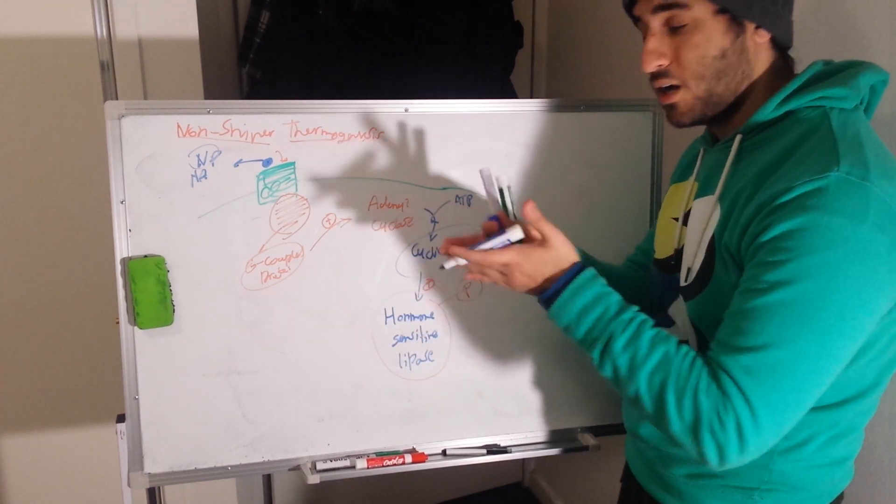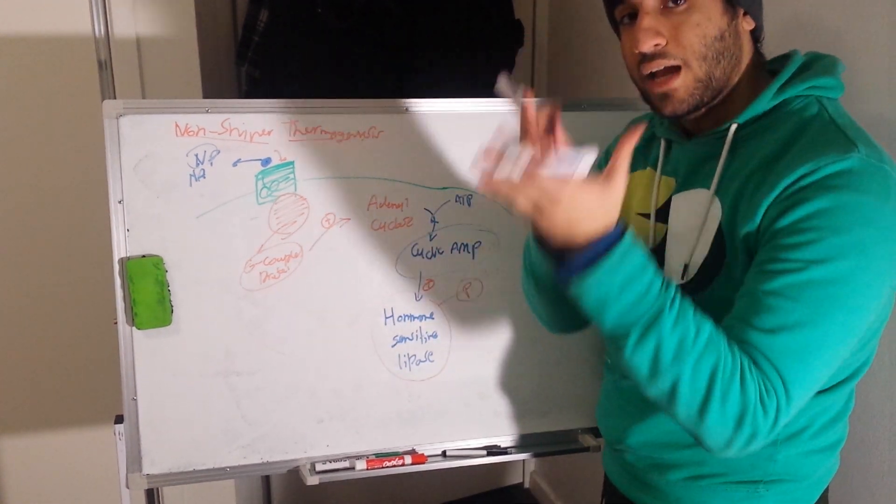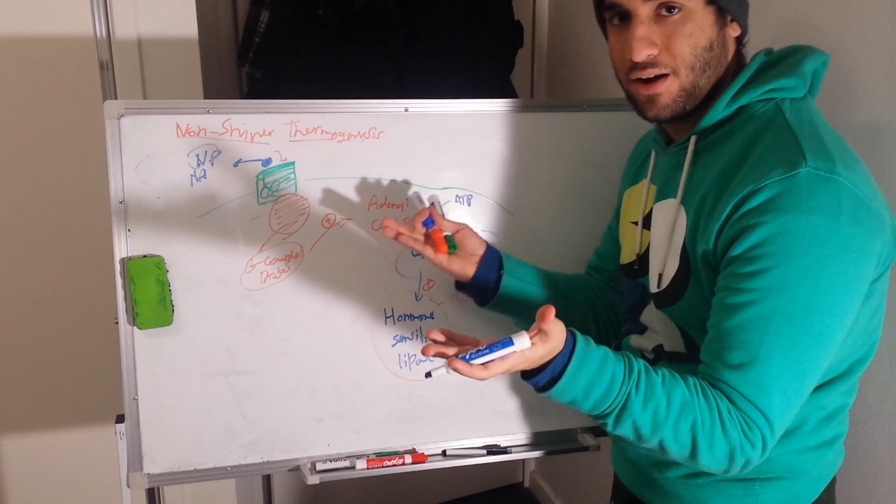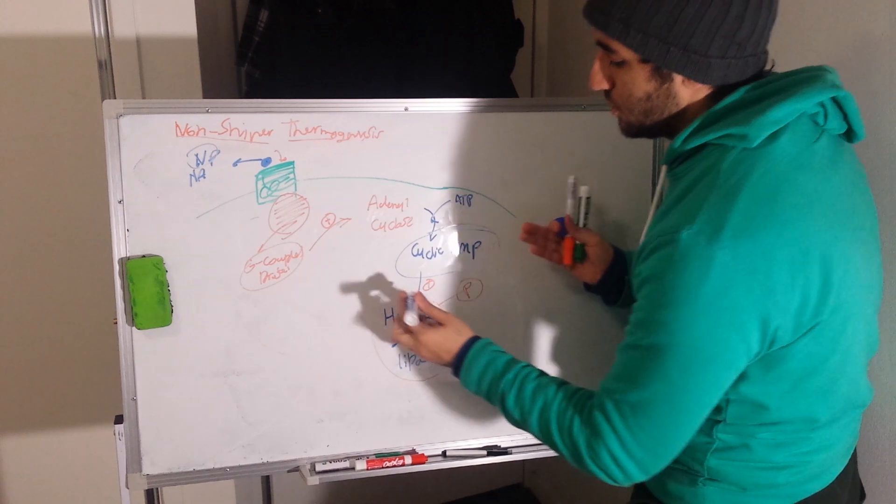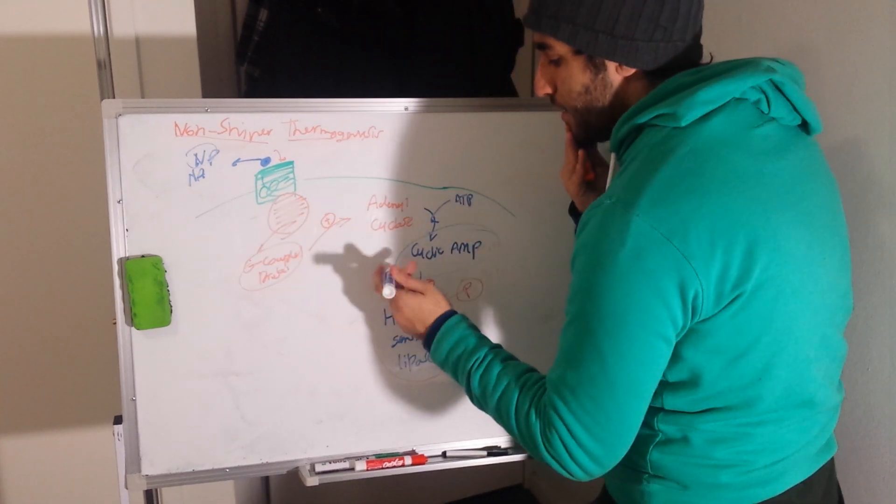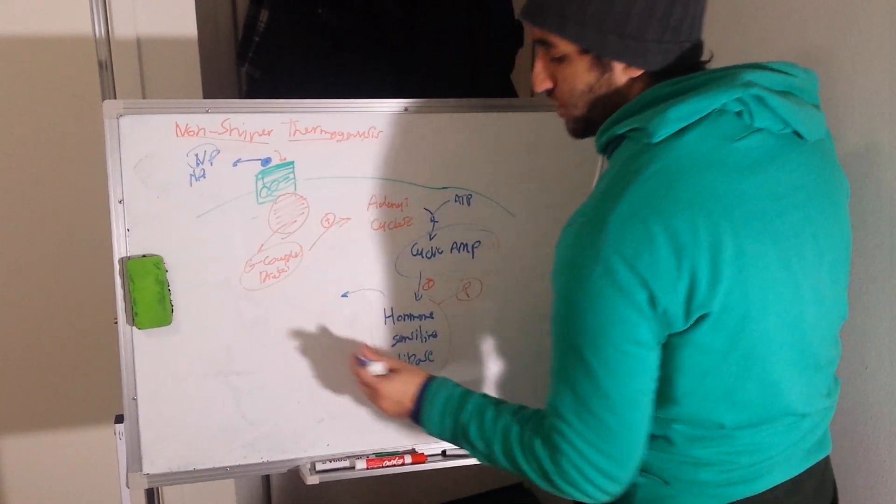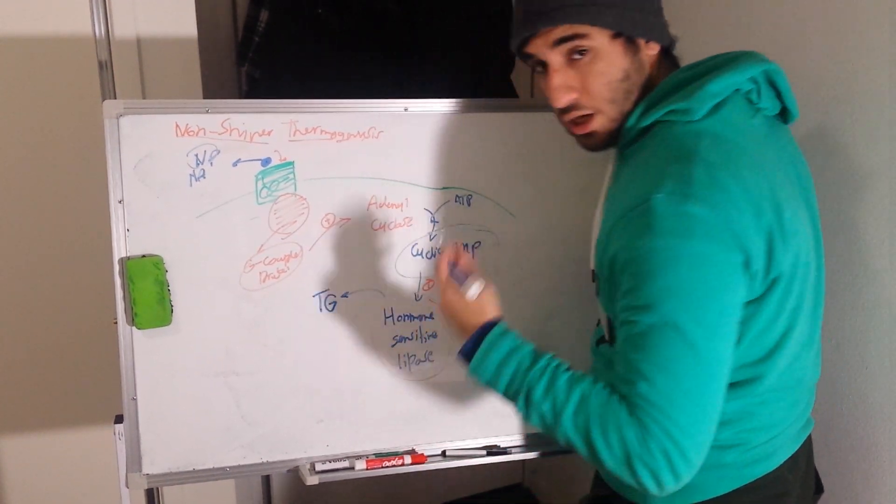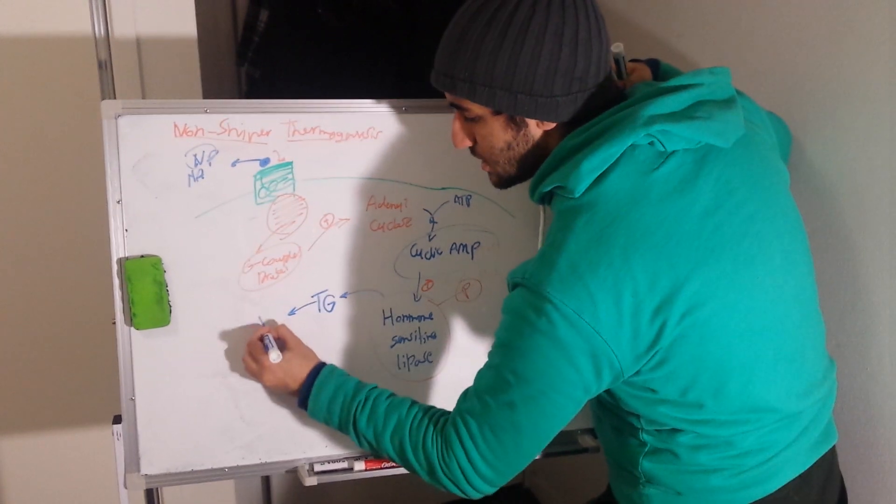This hormone-sensitive lipase is important because it converts the triglycerides—because recall this is brown adipose tissue, we expect to have a lot of fats in there, and triglycerides is one of the main components—it converts the triglycerides into fatty acids.